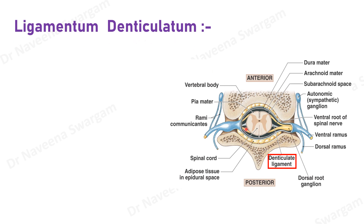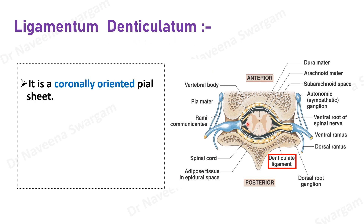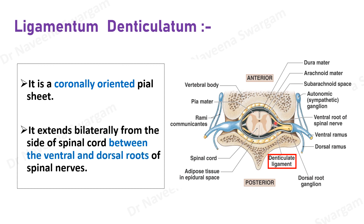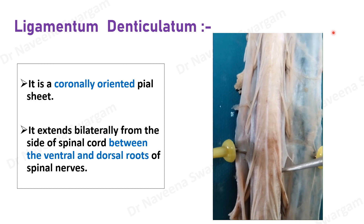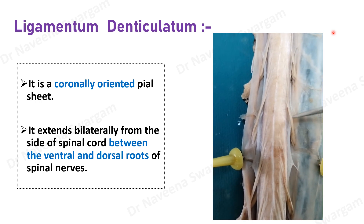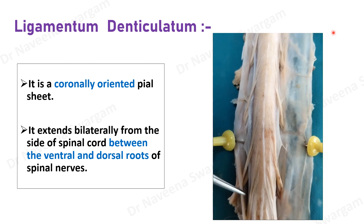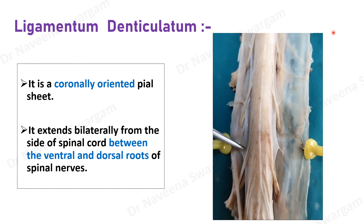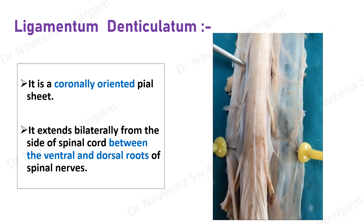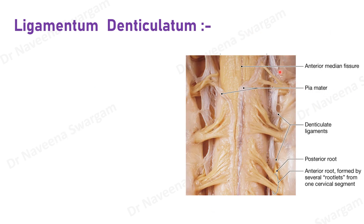Ligamentum denticulatum. It is a coronally oriented pia sheath. It extends bilaterally from the sides of the spinal cord, lying between the ventral and dorsal roots of the spinal nerves. As seen in this video clip, the ligamentum denticulatum extends from the sides of the spinal cord running between the two roots of the spinal nerves. Its lateral margin shows triangular, tooth-like projections — hence the name denticulatum.